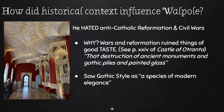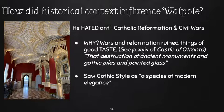How did this historical context influence Walpole? He hated anything that destroyed beauty. He didn't like Catholicism, but he also hated the anti-Catholic Reformation and civil wars — because wars and Reformation had ruined things he felt were in good taste. In Castle of Otranto, he writes about the destruction of ancient monuments, Gothic piles, and painted glass, something he really mourns. He hated whenever churches got destroyed and saw Gothic style as a species of modern elegance — truly the most beautiful architectural and artistic style.